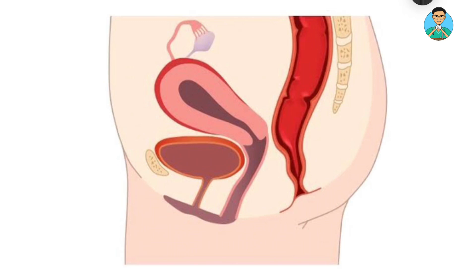We have a cross-section of the female reproductive tract where this is the urinary bladder, this is the rectum over here, and this is our uterus. Here we have our vagina, and this little one over here is our cervix.